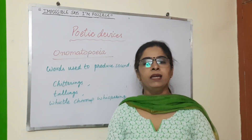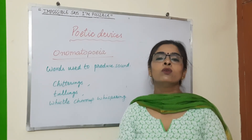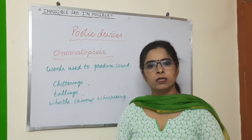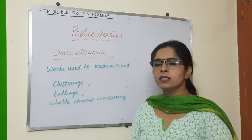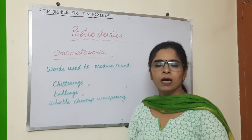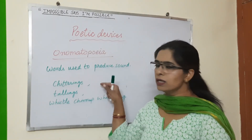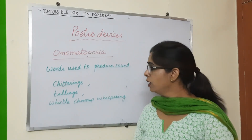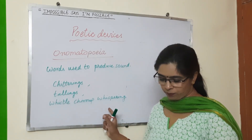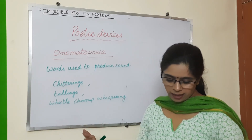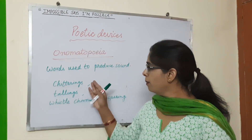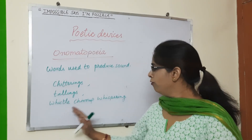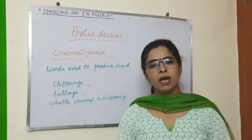Now this is our last poetic device: onomatopoeia. Onomatopoeia means words used to produce sound — words used to represent sounds. Here the words used are: chitterings, trillings, whistle-chirrup, and whisperings. These are the words used to produce sound. 'Chitterings' means the bird calls very loudly; 'trillings' is a sharp sound for a short time; 'whistle-chirrup' means a whistling sound. These different sounds are described through onomatopoeia.